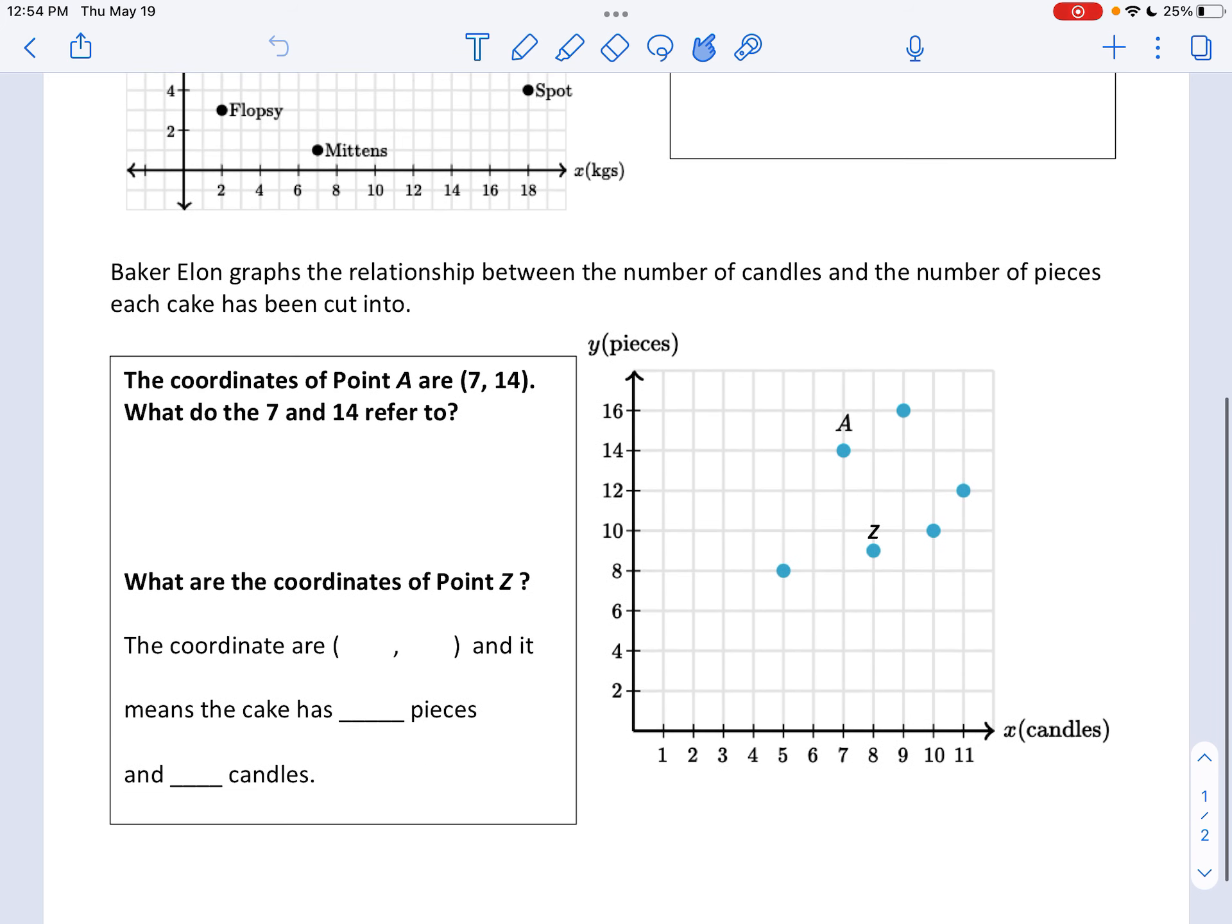I'm going to start with the bottom problem. It says Baker Elon graphs the relationship between the number of candles and the number of pieces each cake has been cut into.